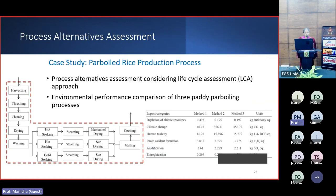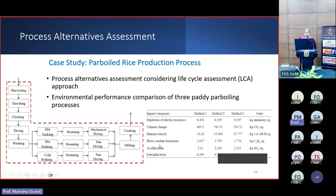Process alternative assessment was also carried out in a case of parboiled rice production. There are three alternatives: hot soaking, steaming and mechanical drying; hot soaking, steaming and sun drying; and cold soaking, steaming and sun drying. We used a life cycle assessment approach to compare these three alternate processing methods. The impact categories considered were depletion of abiotic resources, climate change, human toxicity, photo-oxidant formation, acidification and eutrophication.